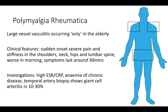Polymyalgia rheumatica is a vasculitis that occurs almost exclusively in the elderly - the vast majority of cases are in the 60-80 age range. It presents with severe pain and stiffness in the shoulders, arms, waist and hips, worse in the morning and improving through the day. Investigations show a high ESR and CRP, and anaemia of chronic disease. If giant cell arteritis is also suspected, a temporal artery biopsy should be performed.